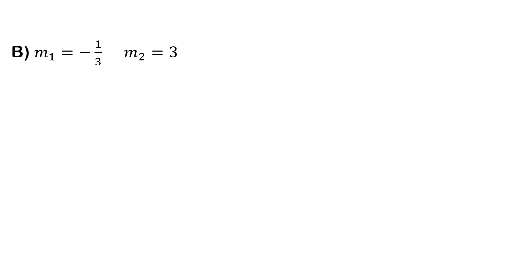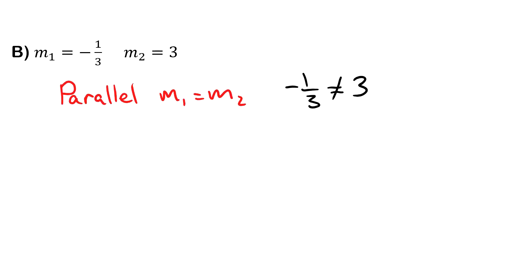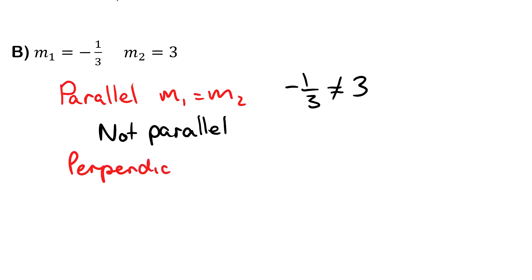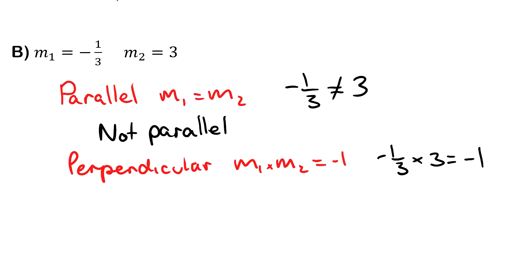Moving to the next pair, we test for parallel first. Negative one over three does not equal three, so we know it's not parallel. Now we test for perpendicular — the product m1 times m2 should equal negative one. Negative one over three times three does equal negative one, so we can say these lines are perpendicular.